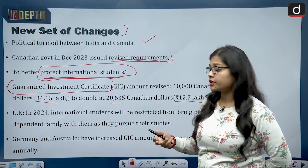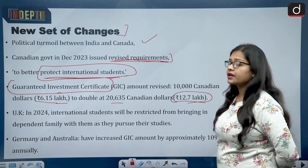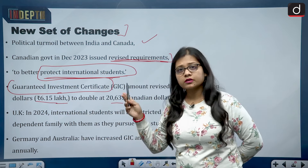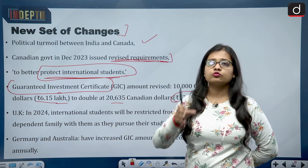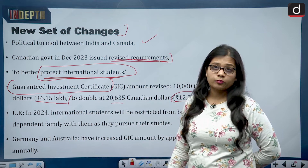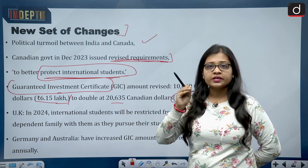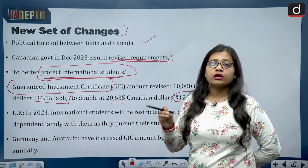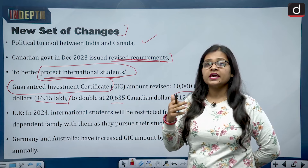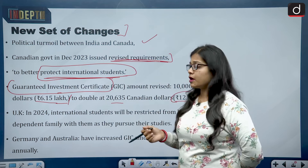Till now, the student going from India to Canada had to submit 6.15 lakh rupees as GIC, but now this amount has been doubled to 12.7 lakh rupees. The student needs to arrange for this 12 lakh rupees, which is an additional financial pressure on the student.